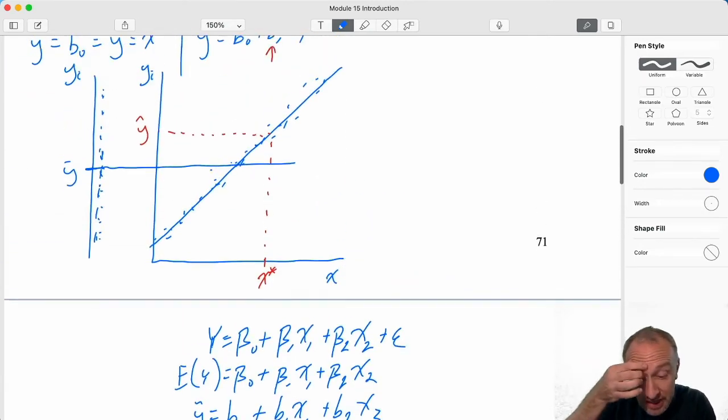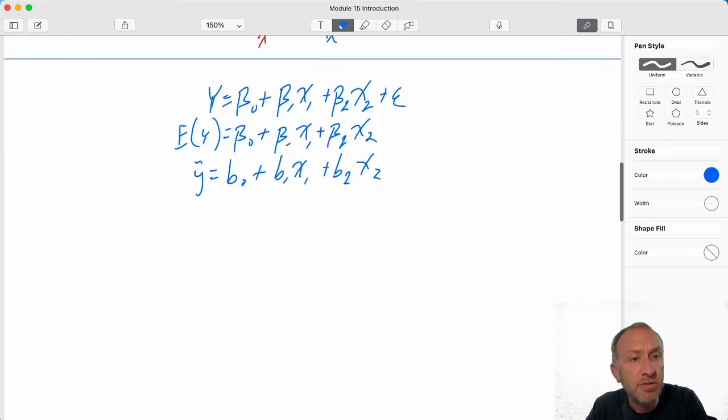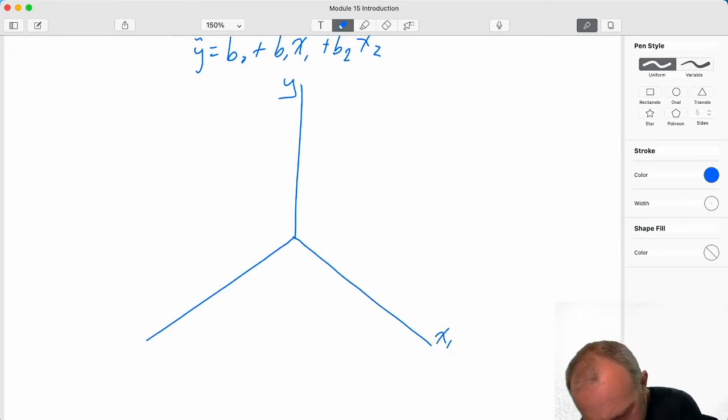Well, now I'm taking the same data. Now I've got more information. Now I've got this additional piece of information, X2. So what is that going to look like? Well, now I'm in three-dimensional space. Here I have Y. Here I have X1. Here I have X2.